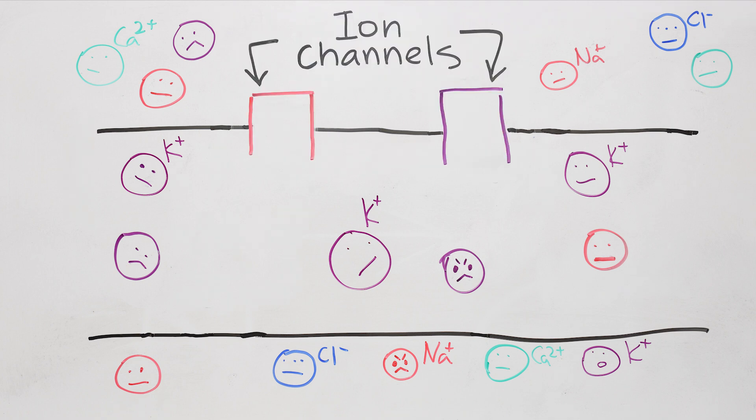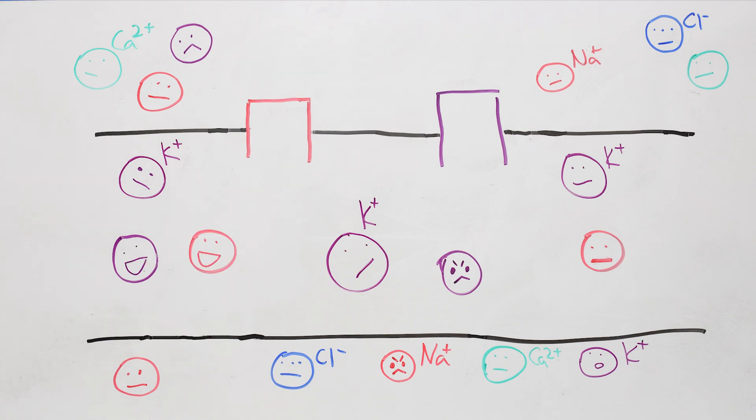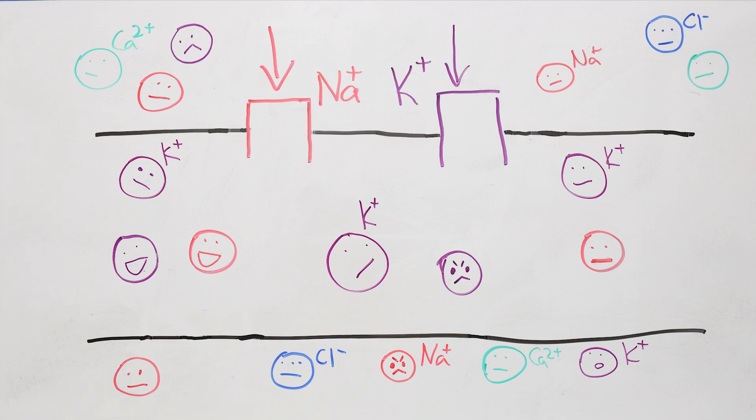So what makes the spike happen? The ion channels. Neuron cell membrane has ion channels that can open to let some ions in, and then close. Most let through only a specific ion, like this one lets through only sodium, and this one potassium. There are other channels for calcium, chlorine, and there are some that let any ions through.